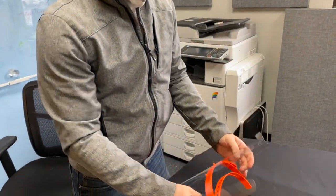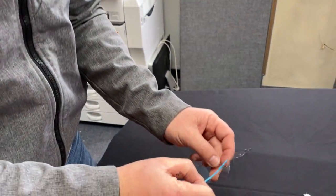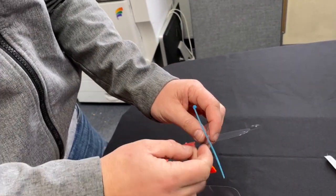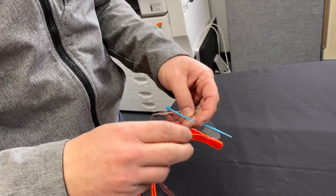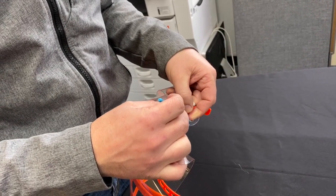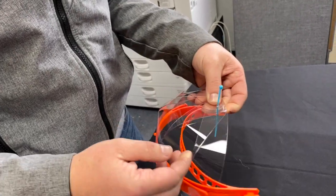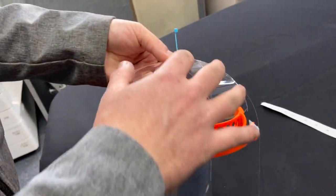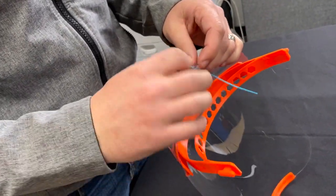To close the top you take a standard zip tie or anything else that you have available. Insert it through the middle one first and then bring the left one behind it, the right one behind it, the next left one behind it, and the next right one behind it. You do it in that order to make sure that it's going to prevent any droplets from catching in as these are layered together.